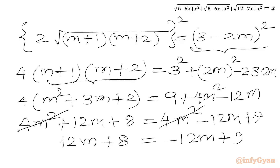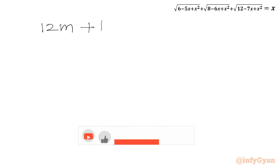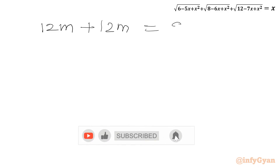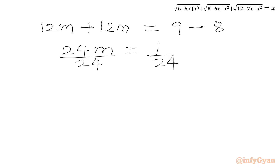Taking −12m to the LHS and 8 to the RHS: 12m + 12m = 9 − 8, so 24m = 1. Dividing both sides by 24 gives m = 1/24.